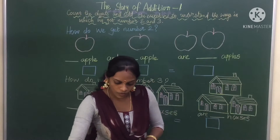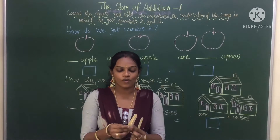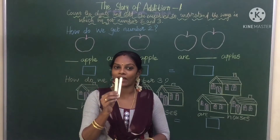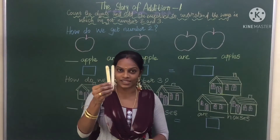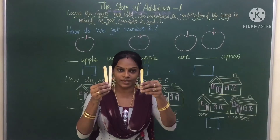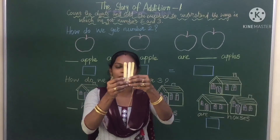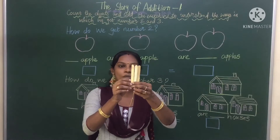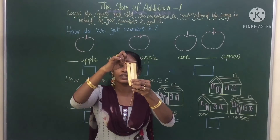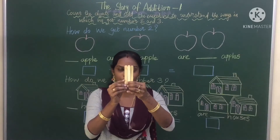Now one more example. Now in this hand I am having two ice cream sticks and here I am having one ice cream stick. Now when I bring together these, it makes how much? One, two, three. How many ice cream sticks? Three ice cream sticks.